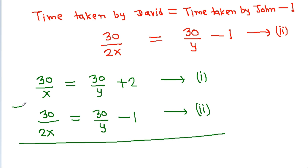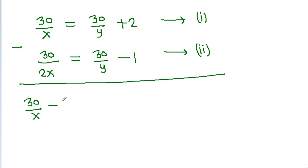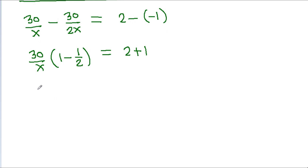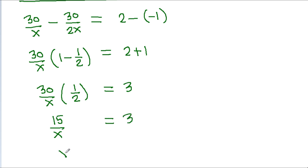Subtracting both equations: 30/x minus 30/(2x) equals 2 minus (−1). The 30/y terms cancel. This gives 30/x times (1 − 1/2) equals 3, so 30/x times 1/2 equals 3, giving 15/x equals 3. Therefore x equals 15/3, which is 5.